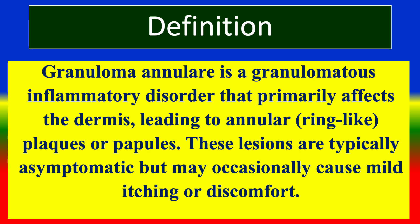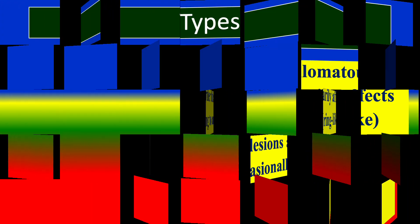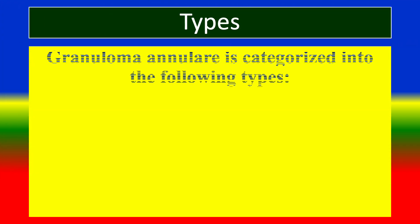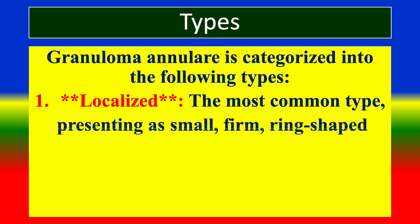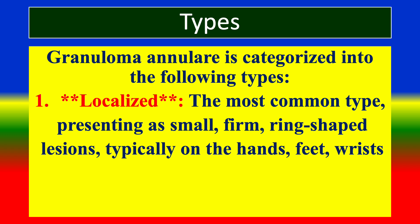Granuloma annulare is classified into the following types. First, Localized — the most common type, presenting as small, firm, ring-shaped lesions typically on the hands, feet, wrists, or ankles. Second, Generalized — affects a large area of the body with multiple lesions, often coalescing.